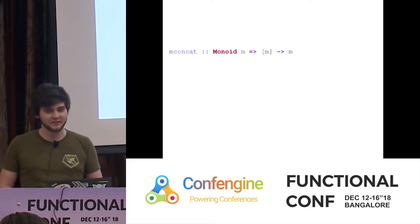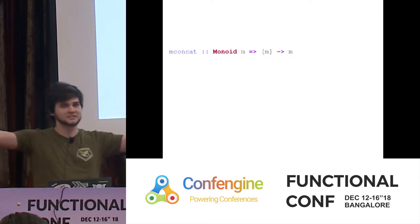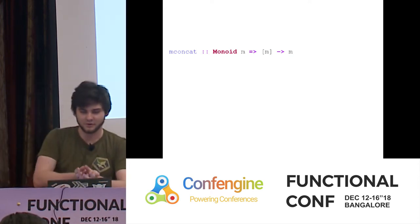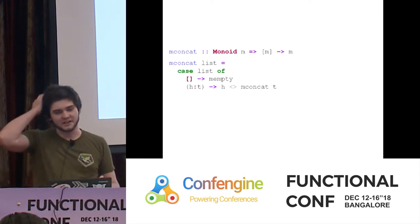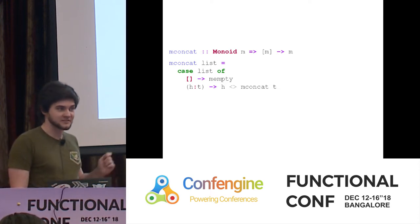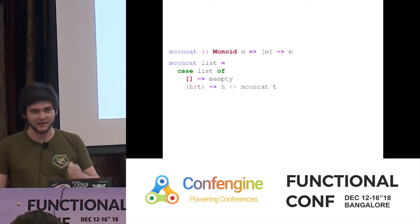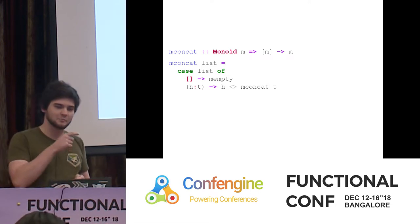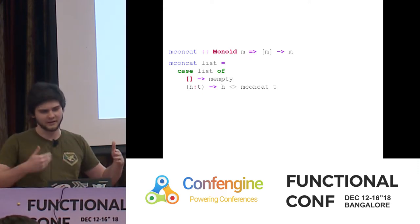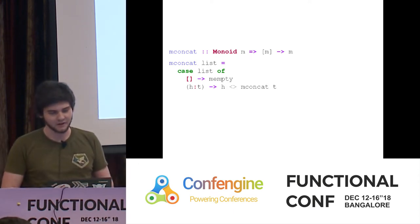A useful function we can write in terms of Monoid is mconcat. If you've got a list of monoids, mconcat smashes them all together into a single value using the monoid operation. If the list is empty, return the monoid empty. If the list has a head and tail, append the head onto the recursive result of mconcatting the tail. We walk through our list, appending as we go, ending with a single aggregate result.